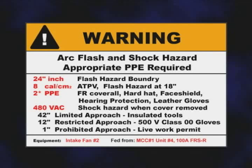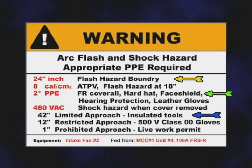This information is used to create the required warning label, so any qualified worker can select the proper personal protective apparel before working on the equipment. This tag lists the flash protection boundary, the level of PPE required for arc flash, and the approach distances based on voltage.